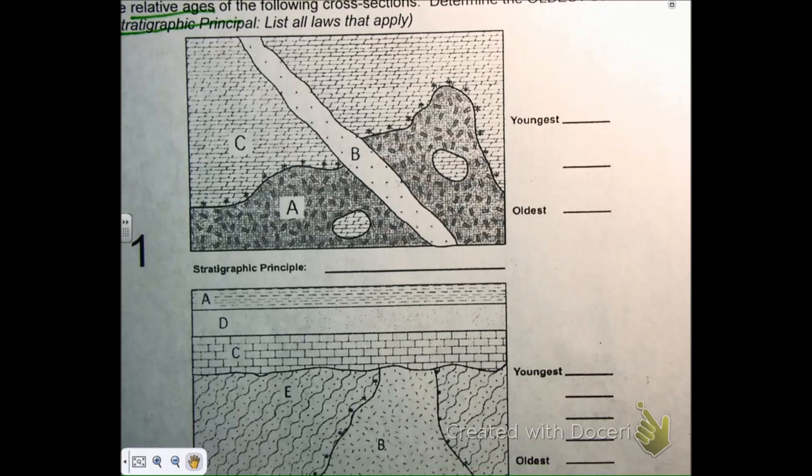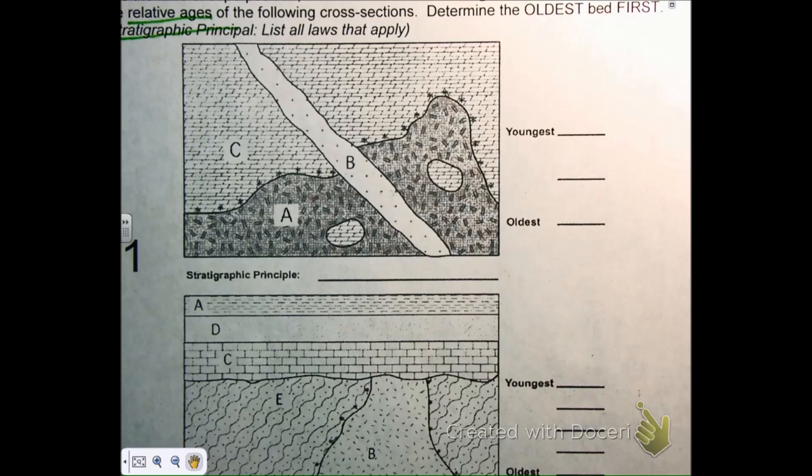I said A. Okay, why? Because it's on the bottom. Which is what principle? Superposition. Okay, she says A because it's on the bottom and the law of superposition tells her that. Who would like to agree that it's A?